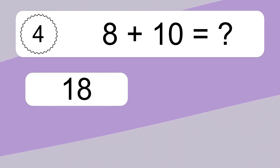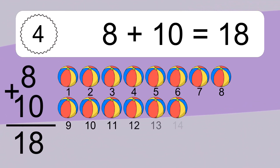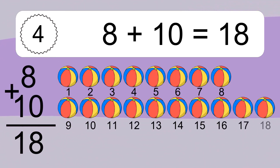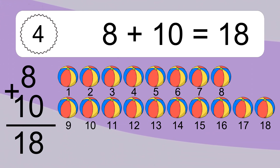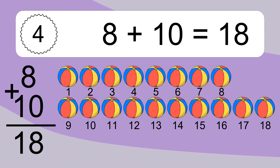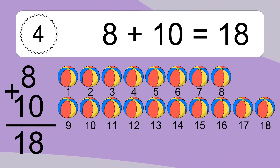8 plus 10 equals 18. Let's count it: 1, 2, 3, 4, 5, 6, 7, 8, 9, 10, 11, 12, 13, 14, 15, 16, 17, 18.